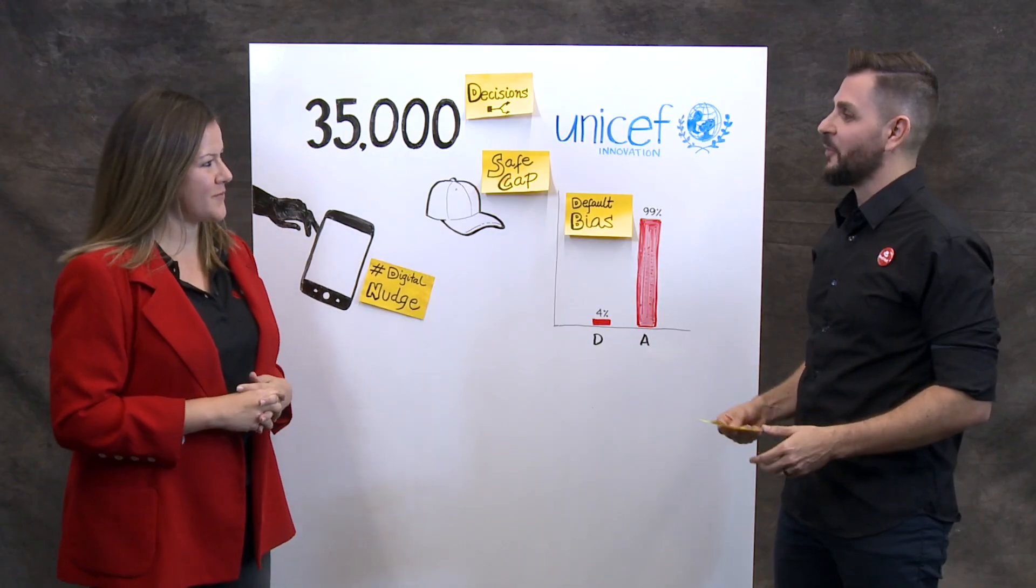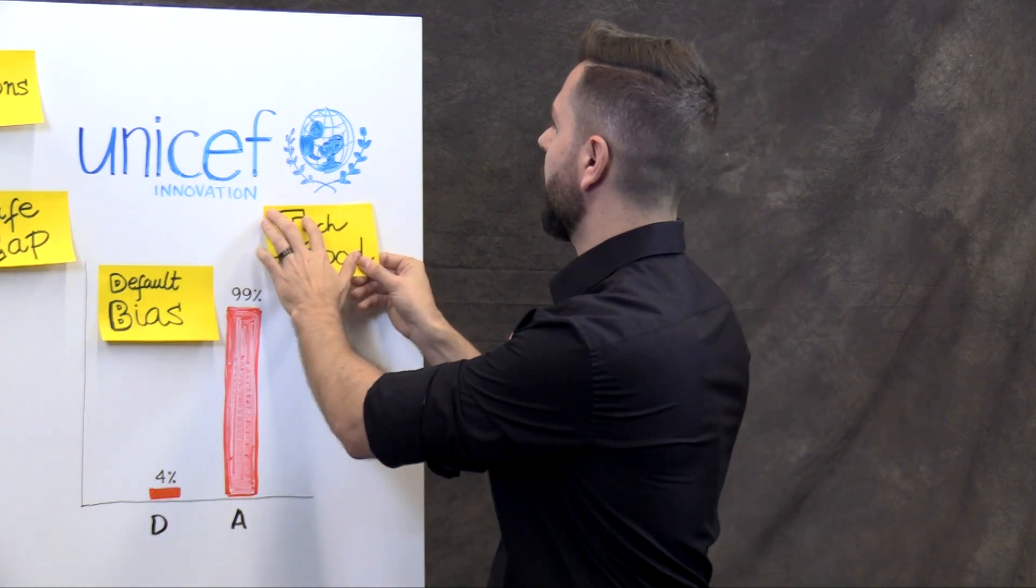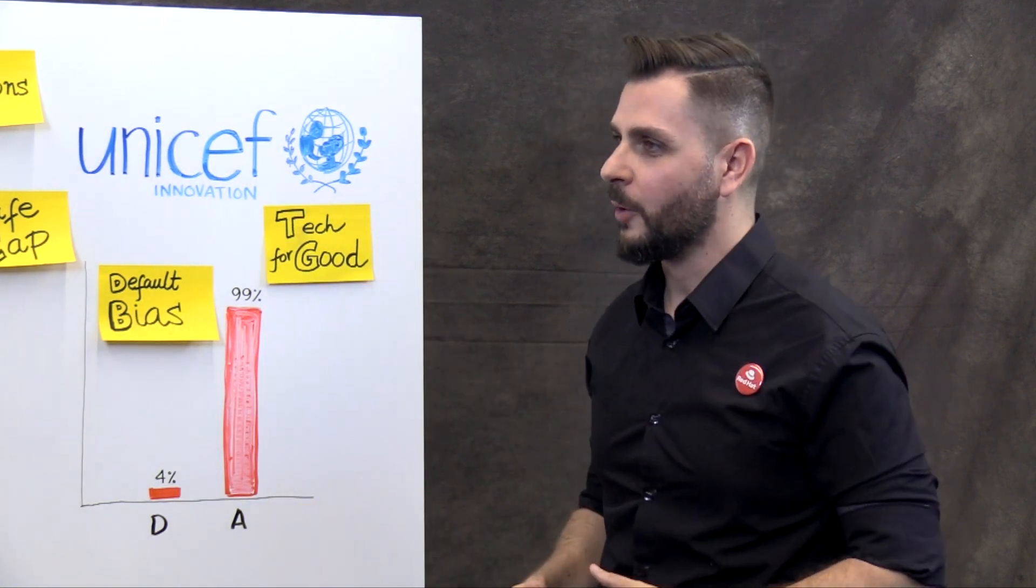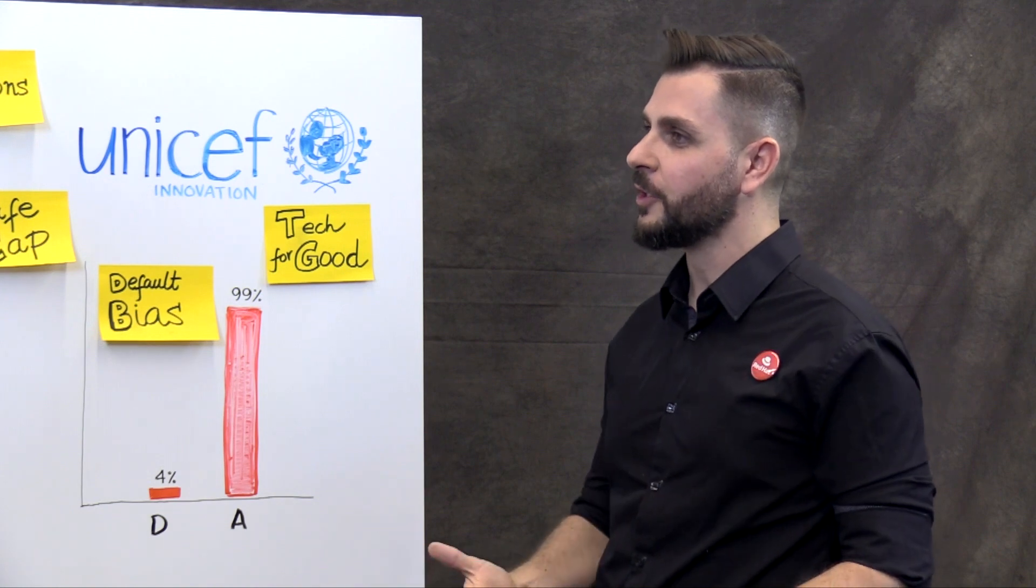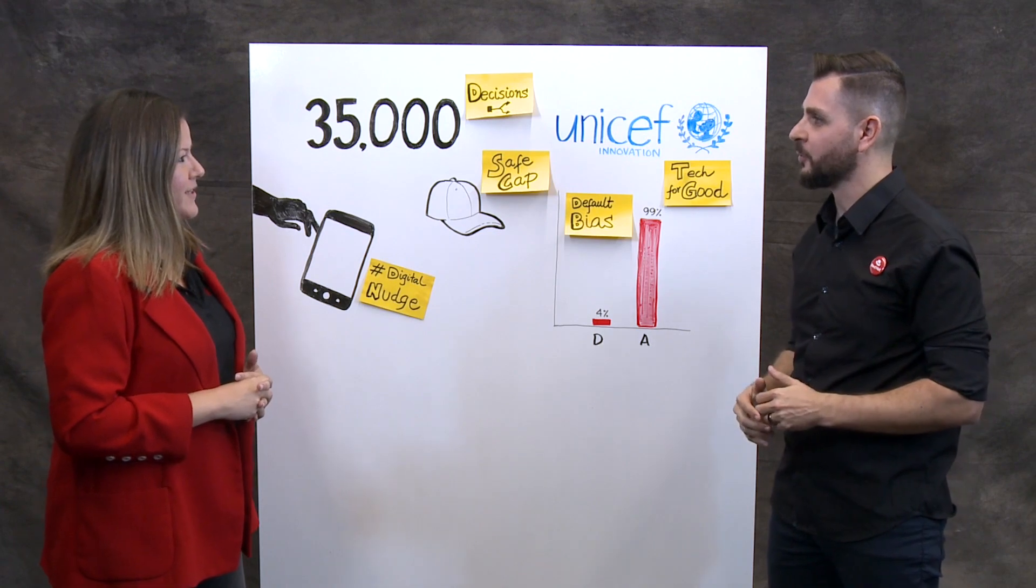Awesome. So this is definitely a digital nudge for good. It's big data for good, and it's technology for good. So if I want to know a bit more about how Red Hat and UNICEF work together to influence those stakeholders to make decisions for good, can I find some information elsewhere?